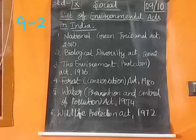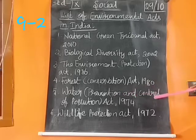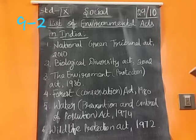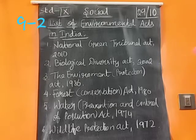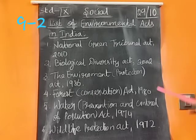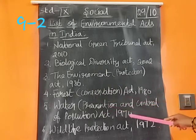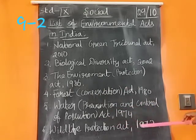The fifth one is the Water Prevention and Control of Pollution Act 1974. The action of this act is to provide maintenance and the restoration of the quality of all types of surface and ground water. That is the main purpose of the Water Prevention and Control of Pollution Act.